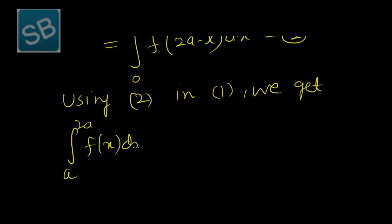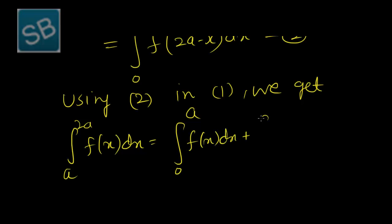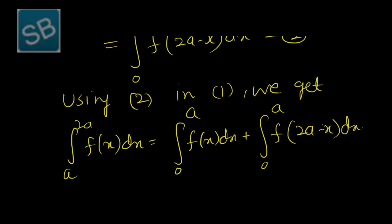Substituting this back, the integral from a to 2a of f(x) dx equals the integral from 0 to a of f(2a minus x) dx. Therefore the integral from 0 to 2a of f(x) dx equals the integral from 0 to a of f(x) dx plus the integral from 0 to a of f(2a minus x) dx. This completes the proof of theorem 3.3.